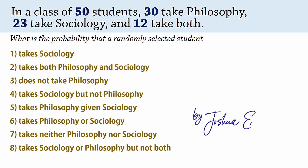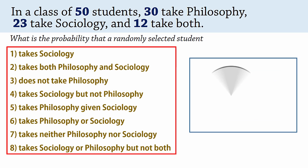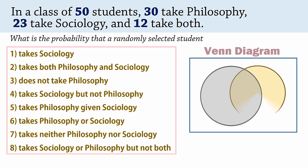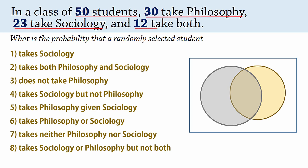Welcome. In this tutorial, I will be answering these probability questions using a Venn diagram. In a class of 50 students, 30 takes philosophy, 23 takes sociology, and 12 takes both.